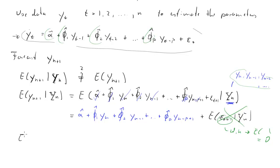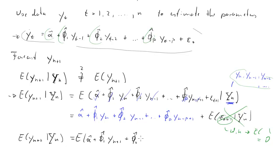Now let's briefly go through the two-step-ahead forecast. We want to forecast Y_{N+2} given information at time N — it's two steps ahead because we have information up to N but we're forecasting N+2. We do the same thing: alpha-hat plus phi-1-hat times Y_{N+1} plus phi-2-hat times Y_N, all the way to phi-p-hat times Y_{N-p+2}, plus epsilon_{t+2}, conditional on information at time N.